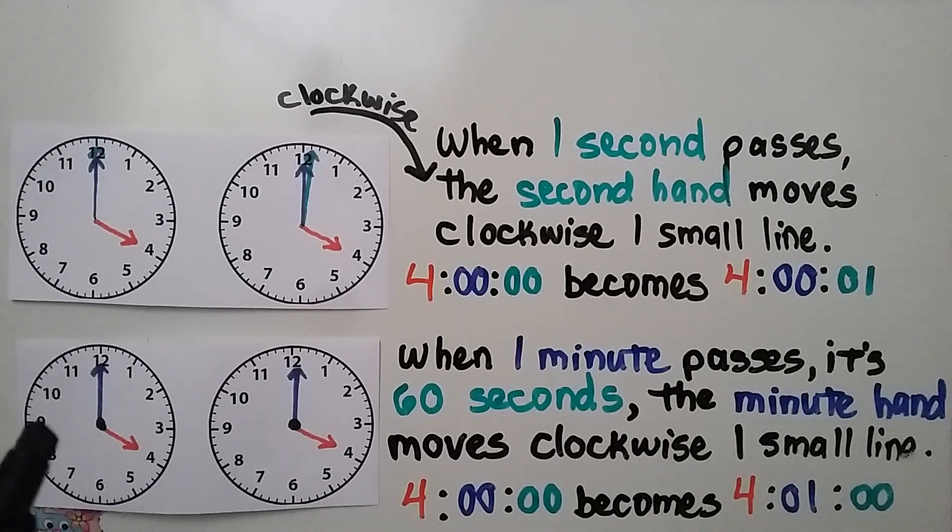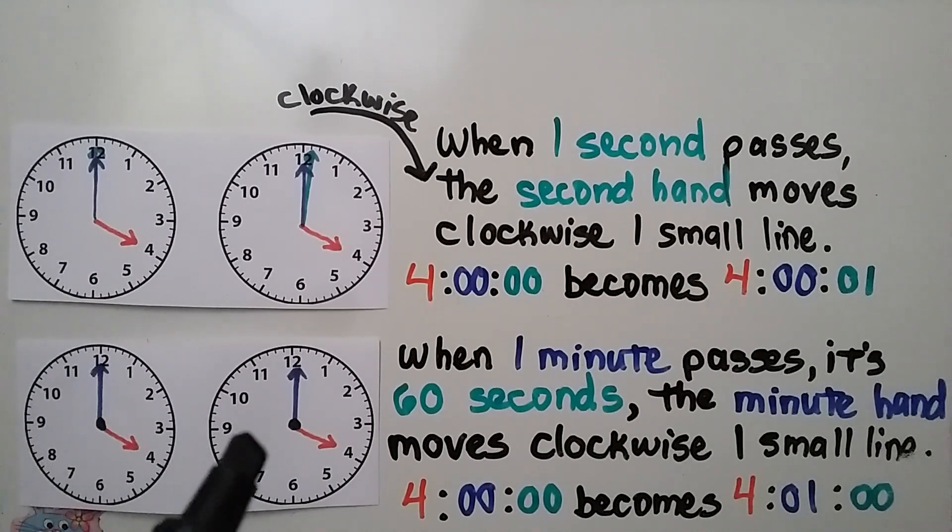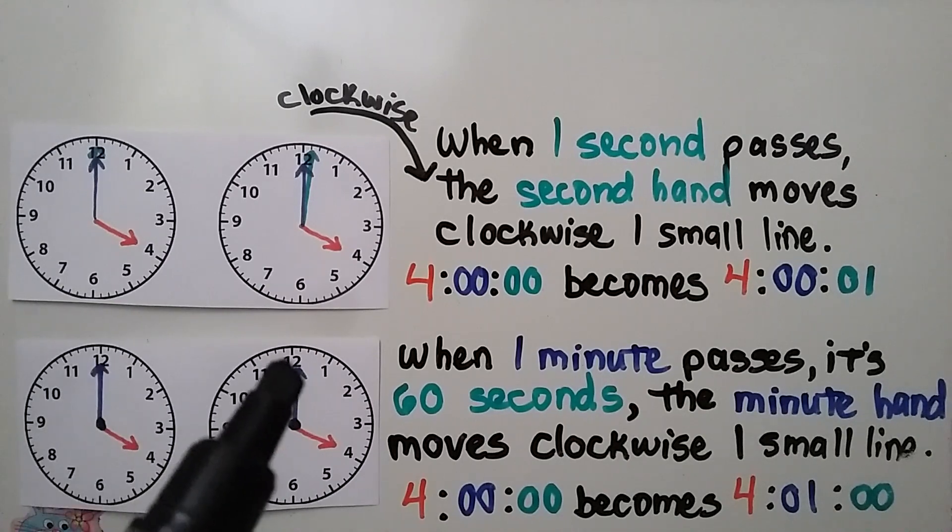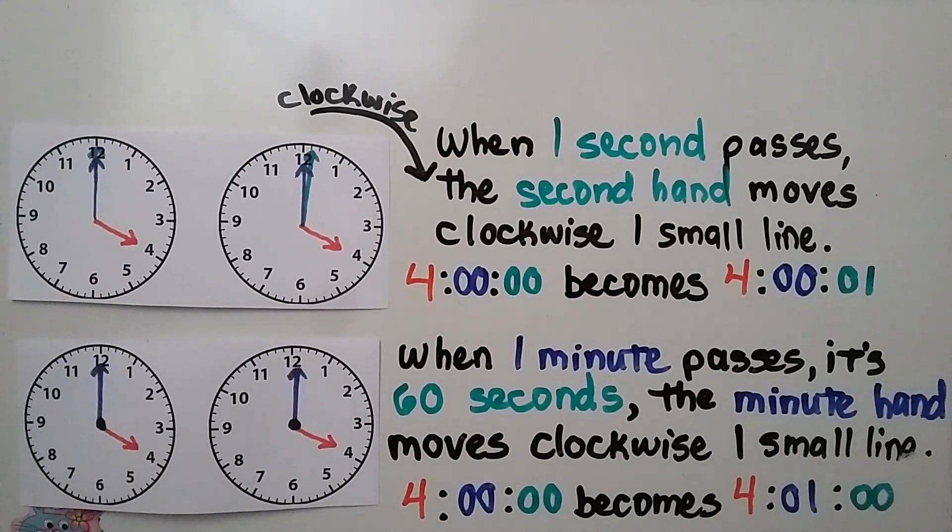When one minute passes, it's 60 seconds, that's one minute, and the minute hand moves clockwise one small line. So it went from the 12 to one little line past the 12. It went from 4 o'clock and it becomes 4:01.